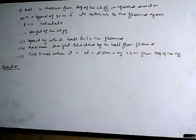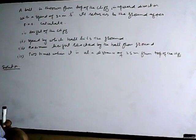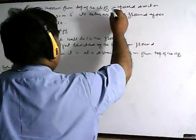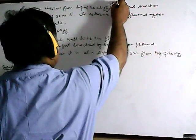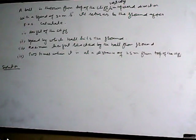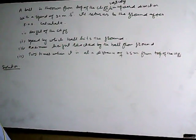A ball is thrown from the top of the cliff vertically in the upward direction with a speed of 30 meters per second. It returns to the ground after 8.0 seconds. Calculate: the height of the cliff, the speed by which the ball hits the ground, the maximum height reached by the ball from the ground, and the two times when it is at a distance of 25 meters from the top of the cliff.